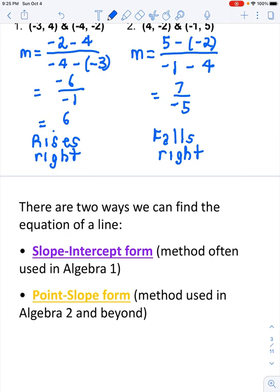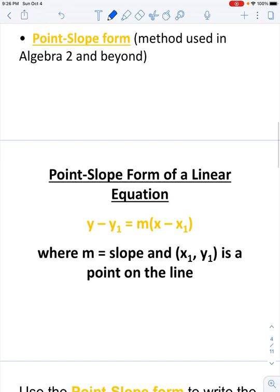Writing the equation of a line. There are two methods we can use to write the equation of a line. The first method, the slope-intercept form, is used often in Algebra 1, but the point-slope form is what we use in Algebra 2 and beyond. In case you've forgotten the point-slope equation, it's y minus y sub 1 equals m times the quantity x minus x sub 1, where m is the slope of the line, and x sub 1, y sub 1 is a point on the line.